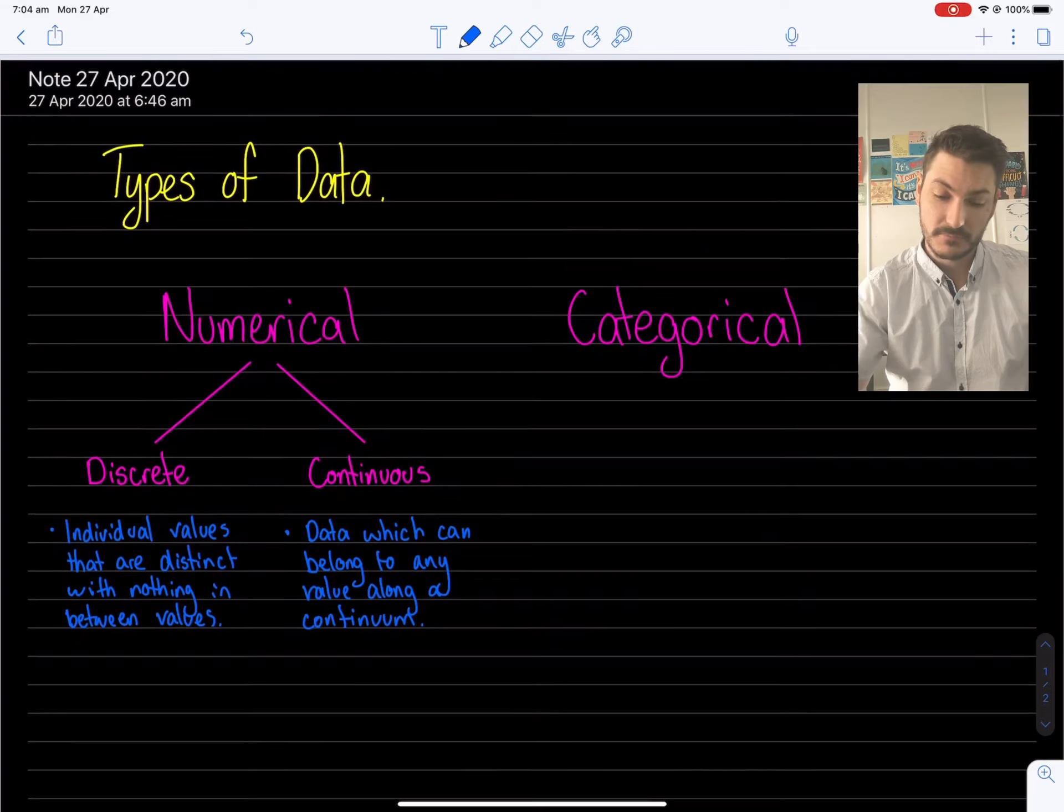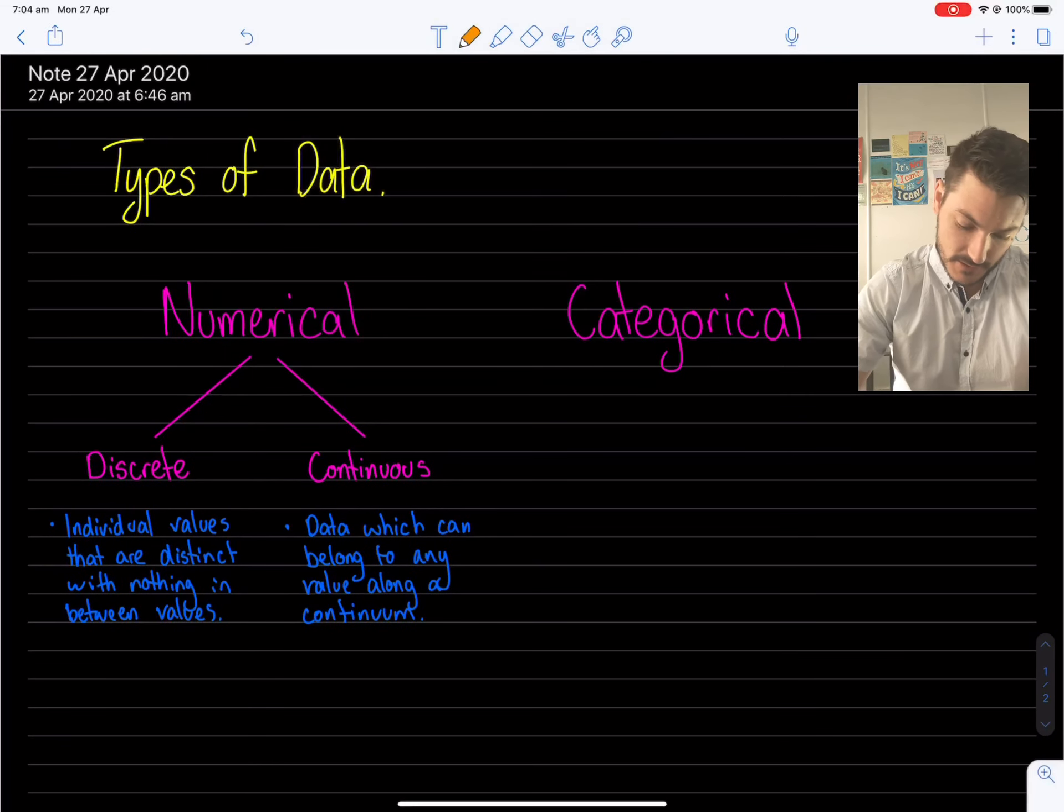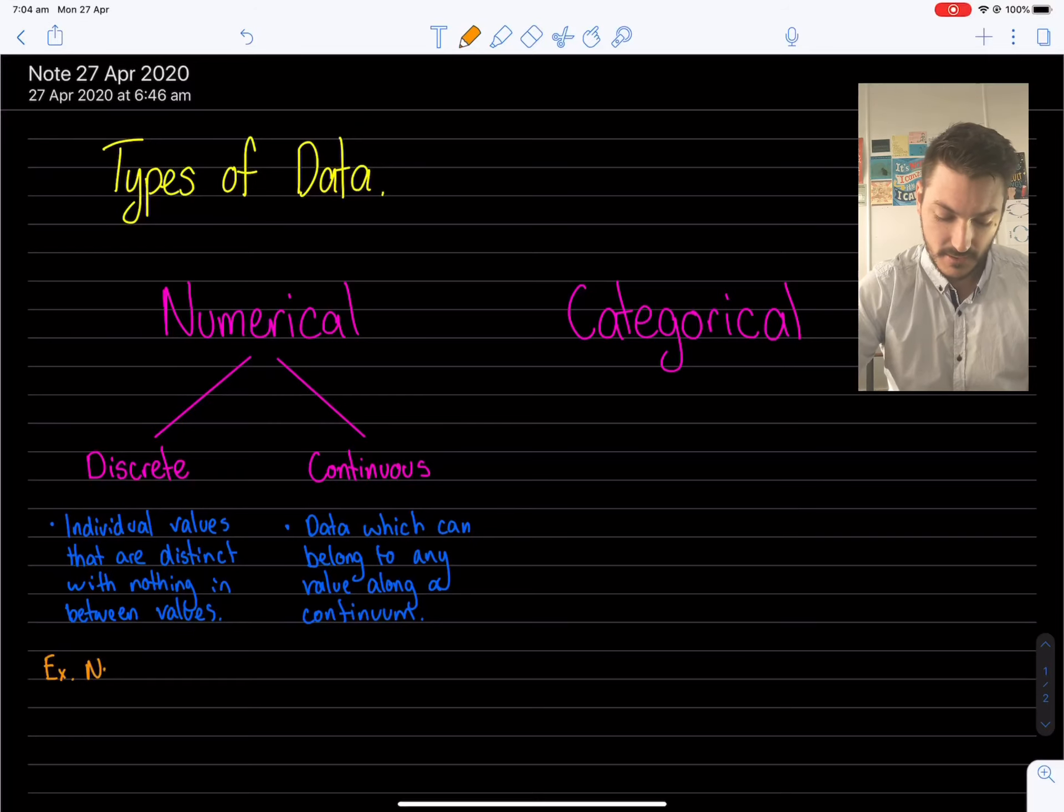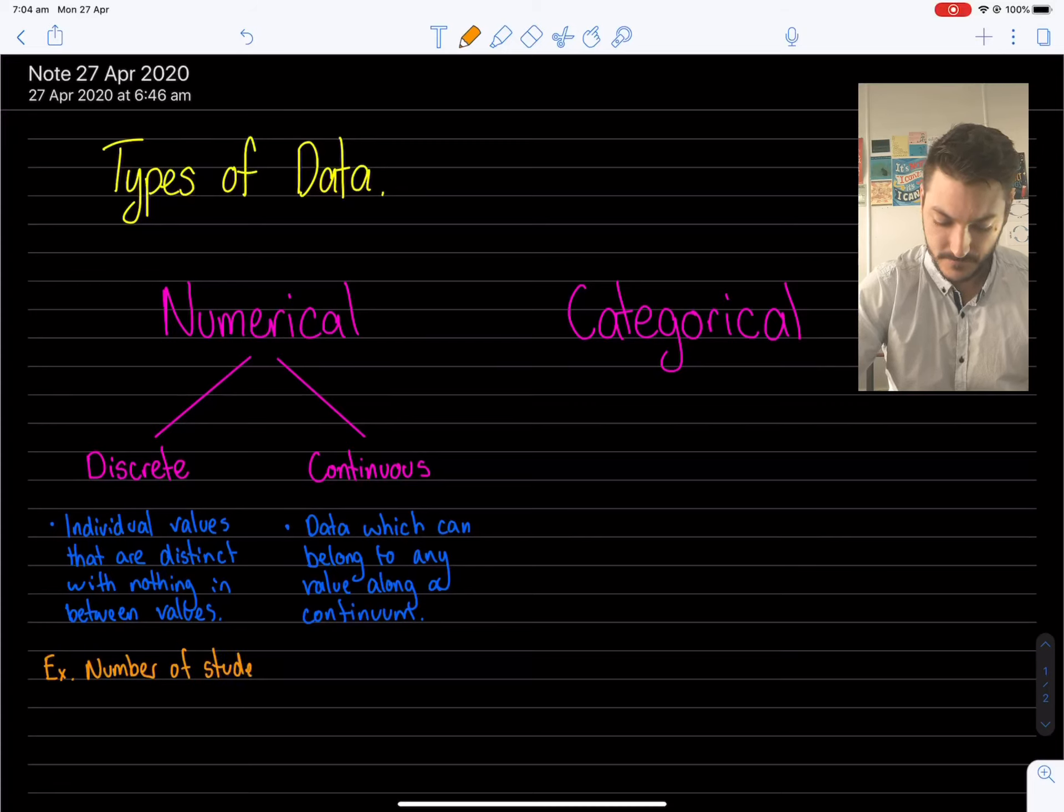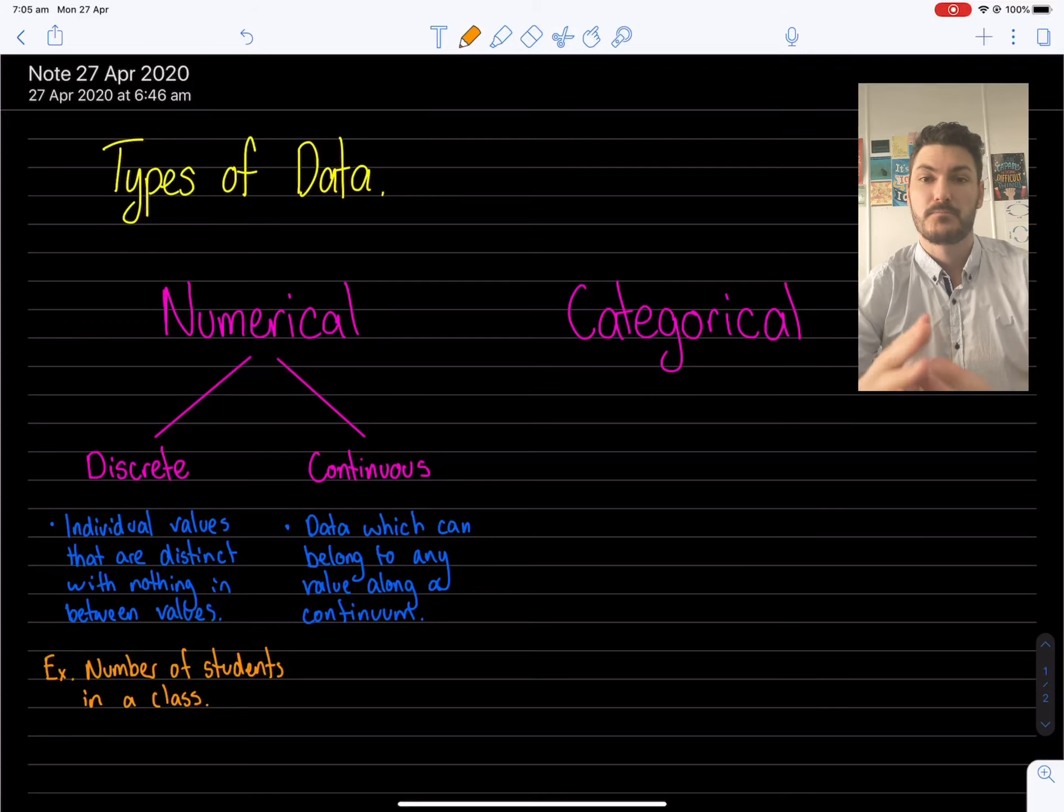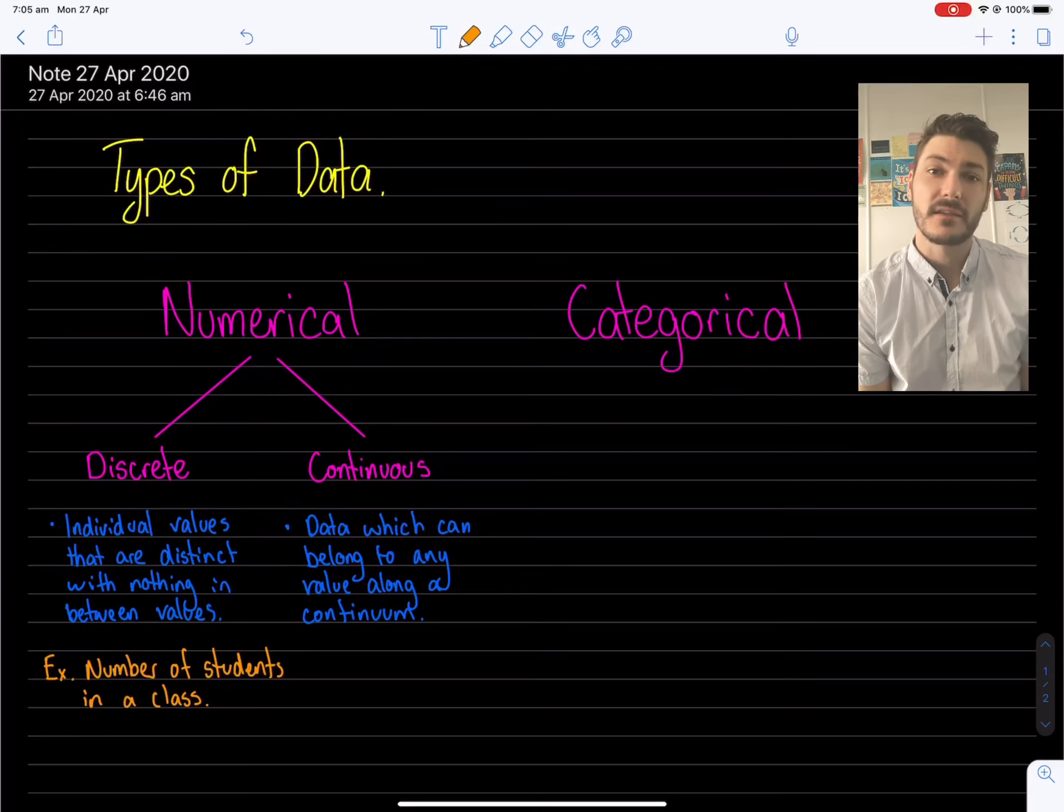So let's give some examples for these two. For example, discrete data, a very common one that we use in schools because it's relevant is number of students in a class. This can be 25, 26, 21, 12. But between the values of let's say 20 and 21, there's no in between. You can't have 20 and a half students in a class.